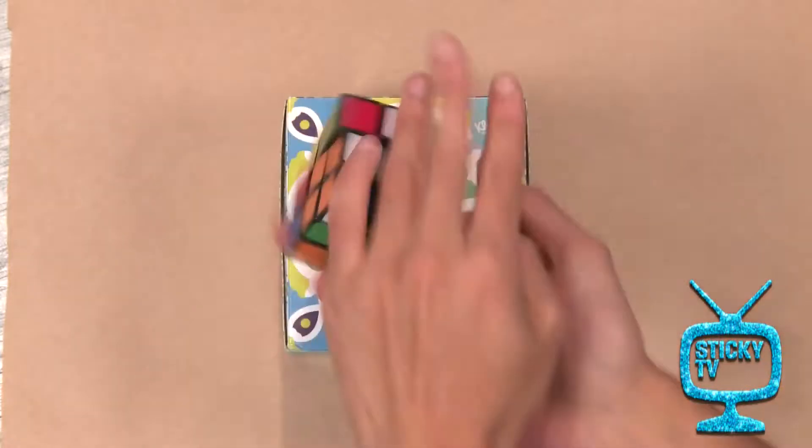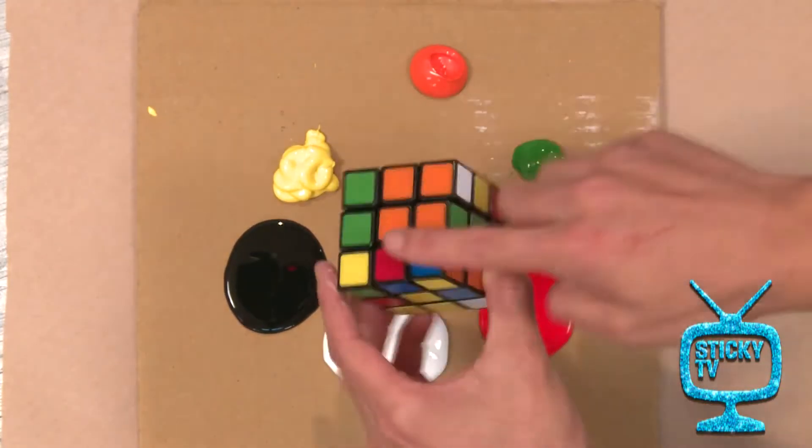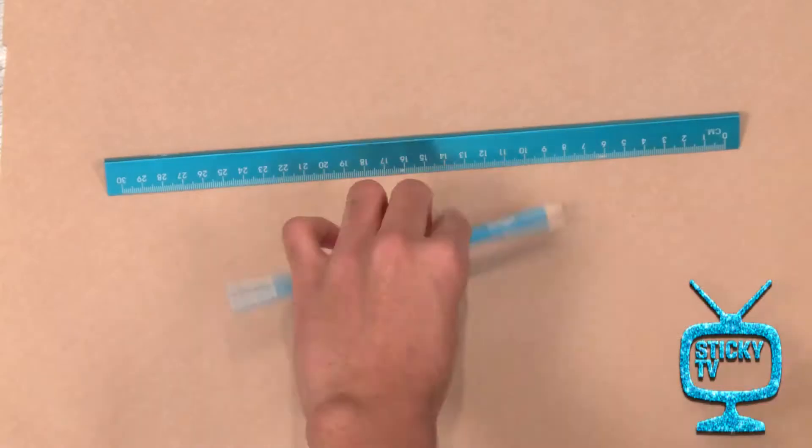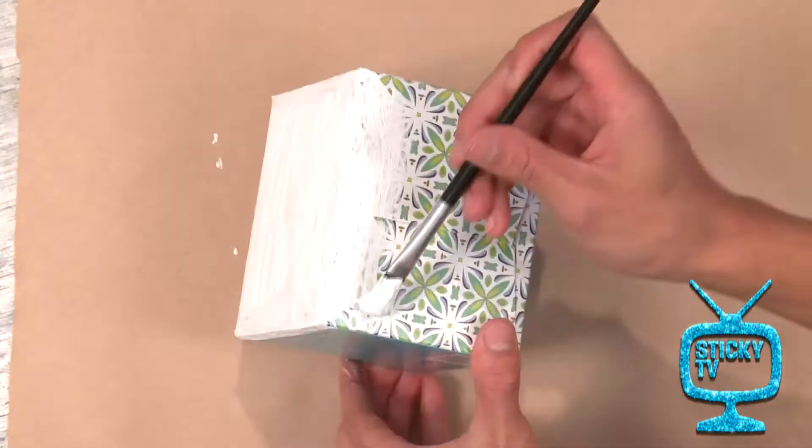You're going to need a square tissue box, some paint in the same colors as a Rubik's Cube, paint brushes, a ruler, and a pencil. Step number one: take your square tissue box and paint it white.